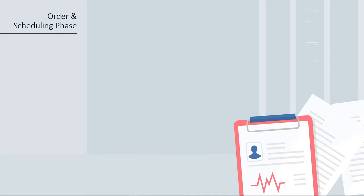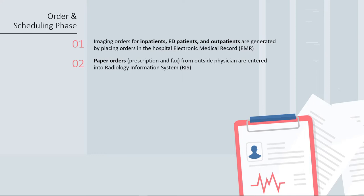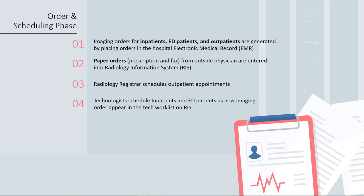In the order and scheduling phase, imaging orders for inpatients, ED patients, and outpatients are generated by placing orders in the hospital electronic medical record system, also known as EMR. Paper orders for outside physicians, such as prescriptions and faxes, are entered into the radiology information system, or RIS. Once the orders are placed, the radiology registrar schedules outpatient appointments, while technologists schedule inpatient and ED patients as new orders appear in the tech worklist in RIS. When orders are placed, they appear as the ordered status in RIS.